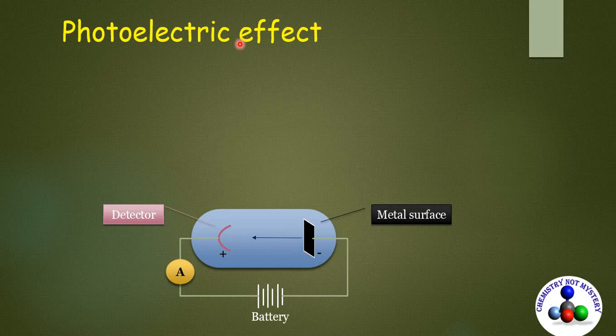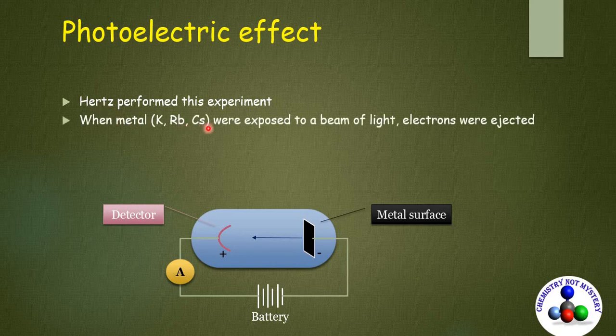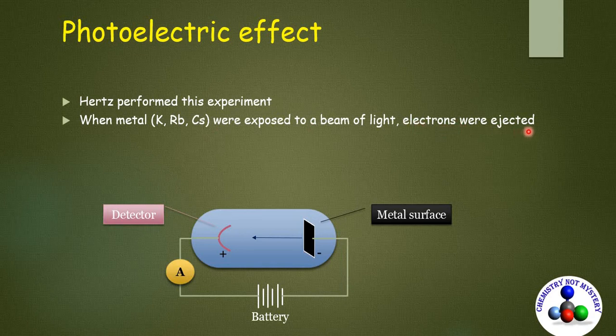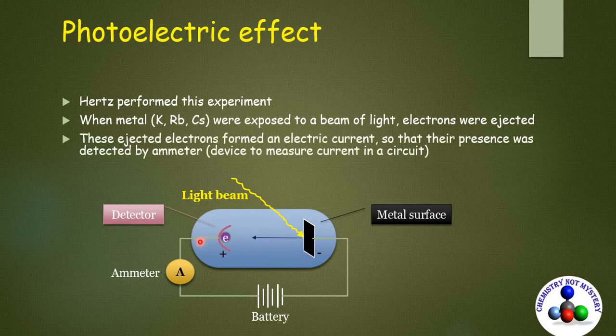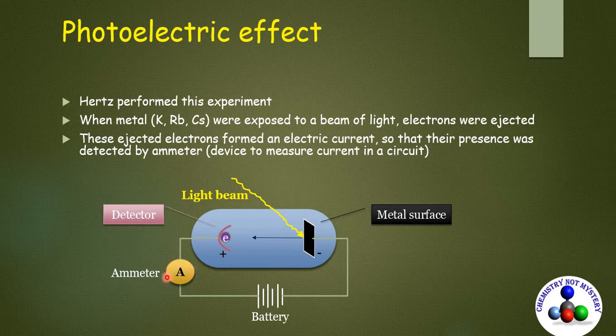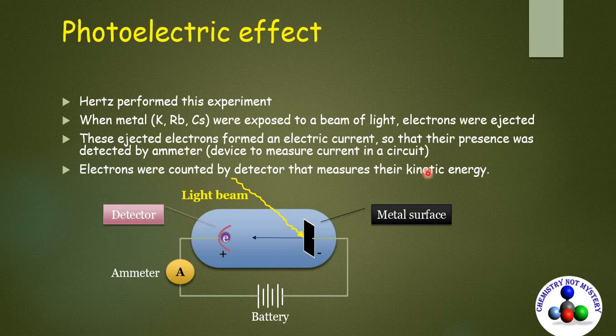This amazing experiment was first performed by Hertz. When first group metals like potassium, rubidium, cesium were exposed to a beam of light, electrons were ejected as you can see in this animation. These ejected electrons formed an electric current so that their presence was detected by the ammeter. An ammeter is a device to measure electric current in a circuit. These ejected electrons were counted by a detector that measures their kinetic energy.